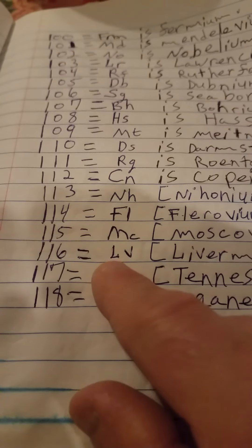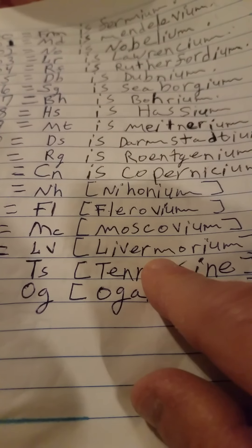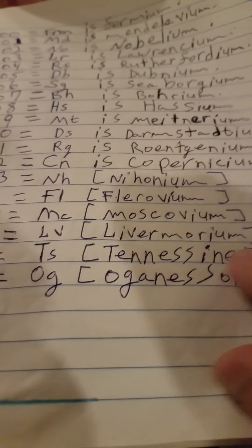Then you got capital LV, and that's Livermorium. That's what capital L and small V is for.